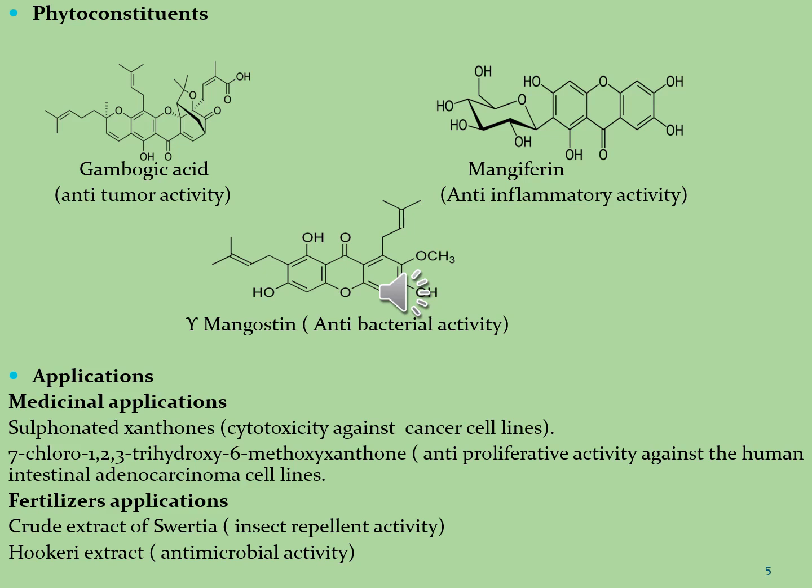The next molecule is mangostin, found in the plant Garcinia mangostana. It is used for diarrhea, urinary tract infections, gonorrhea, thrush, tuberculosis, menstrual disorder, cancer, osteoarthritis, and an intestinal infection called dysentery. It is also used for stimulating the immune system and improving mental health.